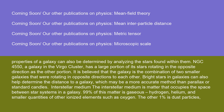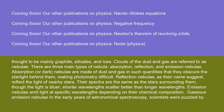The interstellar medium is matter that occupies the space between star systems in a galaxy. 99% of this matter is gaseous — hydrogen, helium, and smaller quantities of other ionized elements such as oxygen. The other 1% is dust particles, thought to be mainly graphite, silicates, and ices. Clouds of the dust and gas are referred to as nebulae. There are three main types of nebulae: absorption, reflection, and emission nebulae.